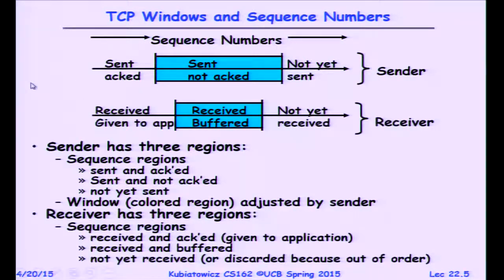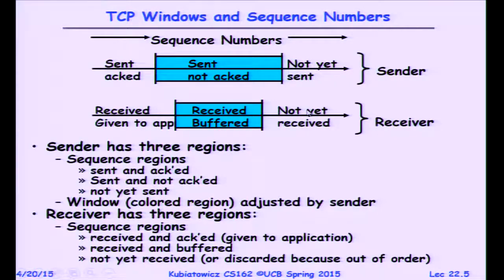At the receiver side there's a similar scenario: parts of the sequence range that have been received and already given to the application, parts that have been received and buffered but not yet given to the application, and parts that haven't been received yet — which may never actually arrive.